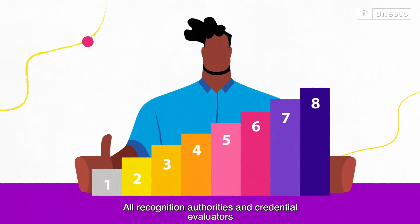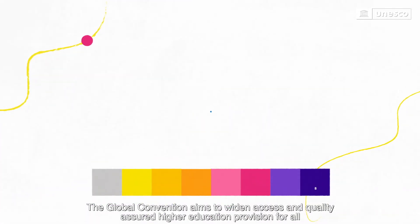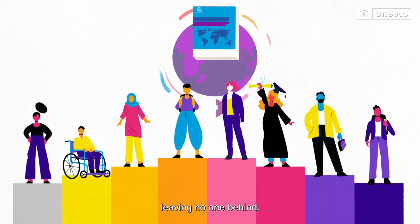All recognition authorities and credential evaluators should apply the fundamental principles of recognition and follow these eight steps. The Global Convention aims to widen access and quality-assured higher education provision for all, leaving no one behind.